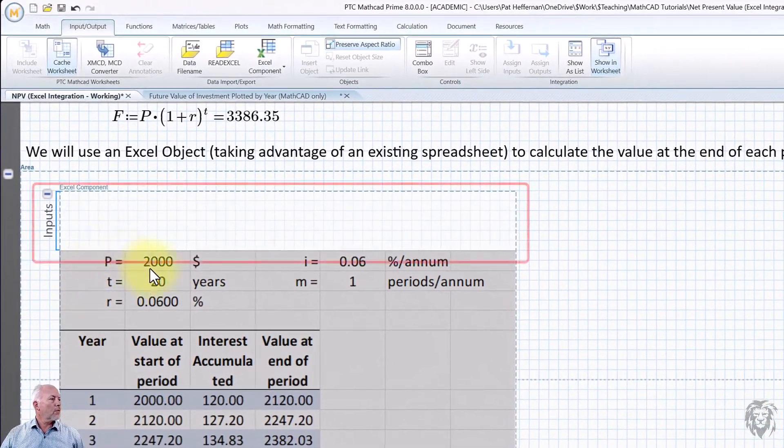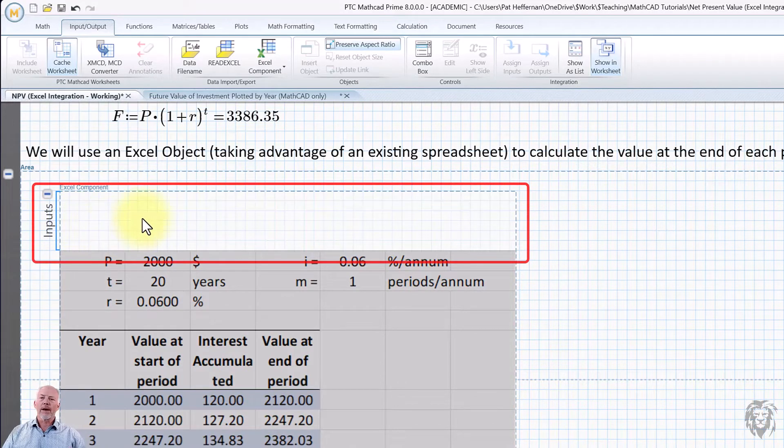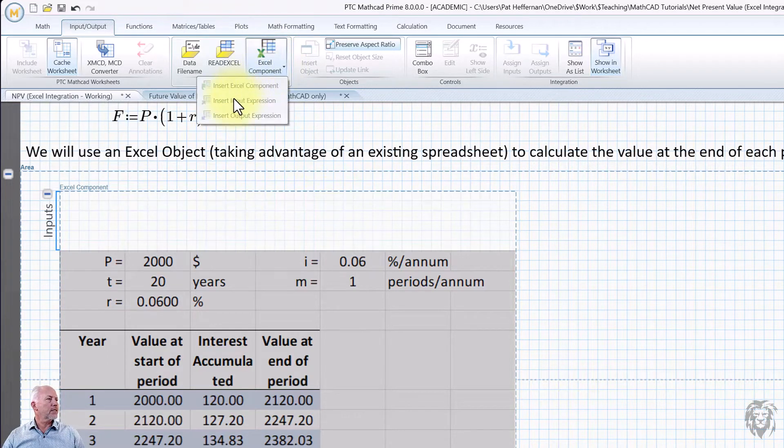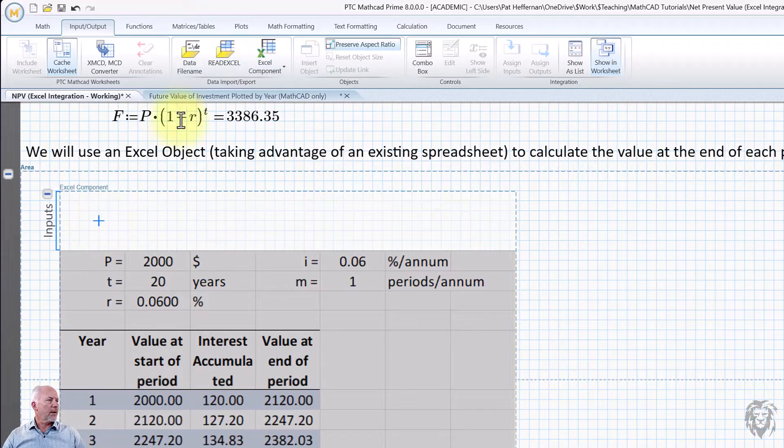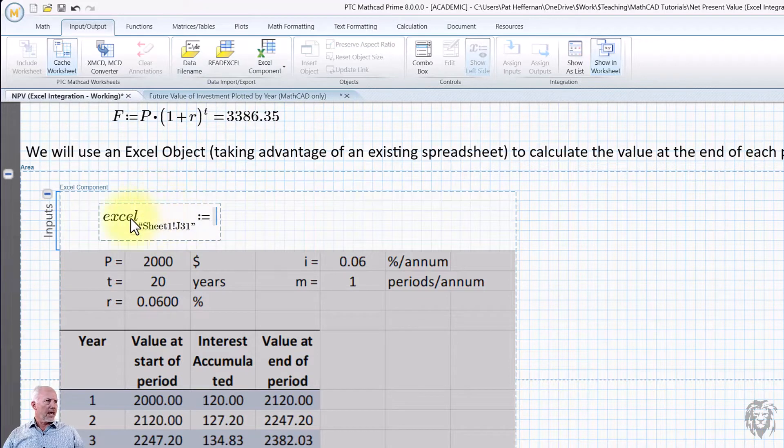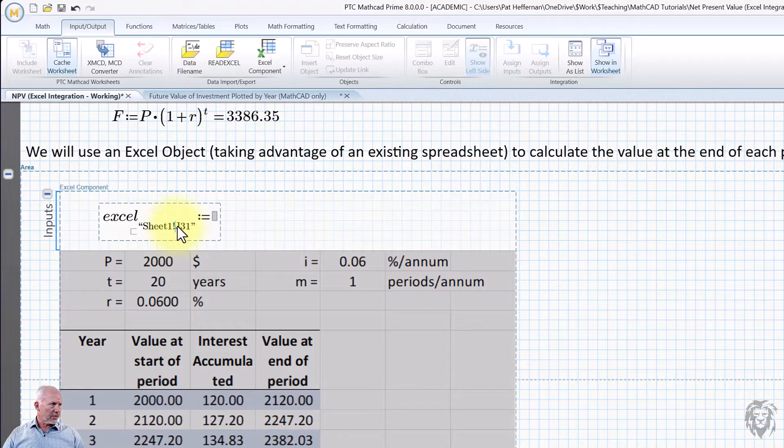Okay. So what we're going to do is we're going to use these inputs because what we have to do is we have to take the variables and the values of variables in MathCAD and we need to transfer them over to the Excel object so that Excel will update its spreadsheet to use those variables. And so the component that we use is insert input expression. So when we're down here, if we go up here, you'll notice it's no longer grayed out. We can choose insert input expression and you get this.